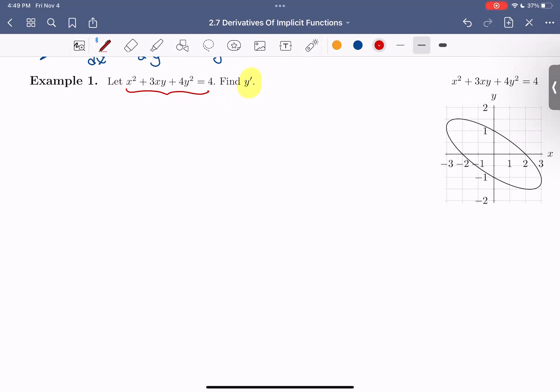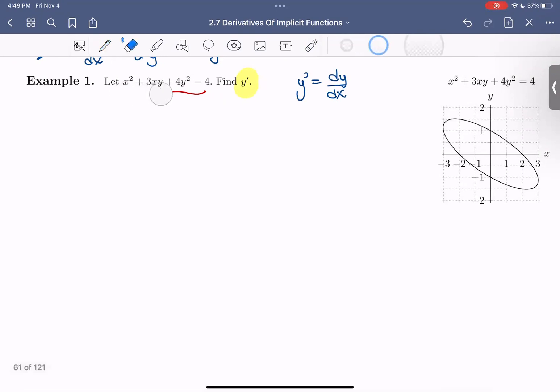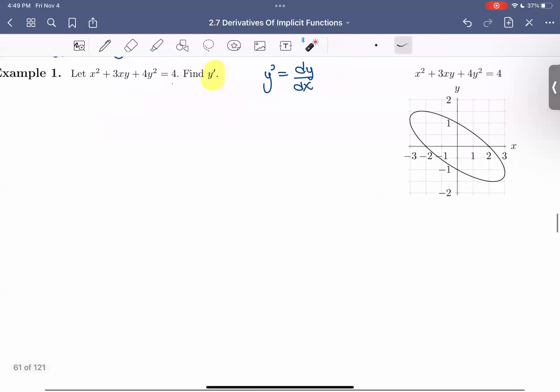We're letting x squared plus 3xy plus 4y squared equal 4, and we want to find the derivative of y with respect to x. So in general, just this y prime is a little vague, but when we're given an equation like this, then we know that prime means we want to compute the derivative with respect to that x.